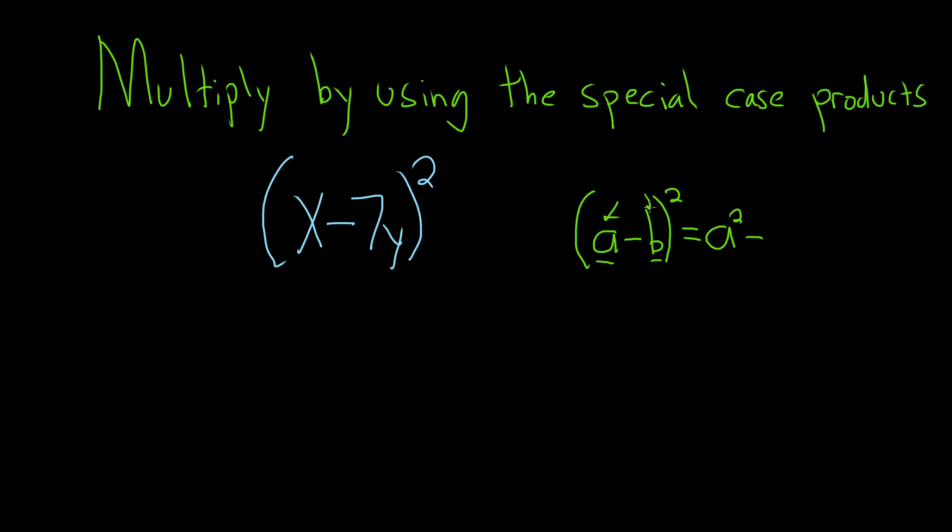Then you multiply the A and the B, and then you double it, so you put a 2. So it's 2AB, and then it's always a plus, and then you square the last one.